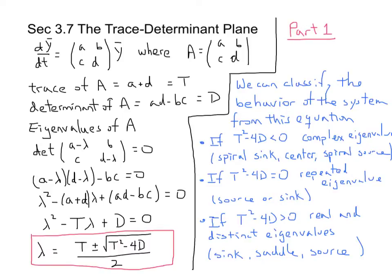The point of the trace determinant plane, and I'll introduce those terms in a minute, is to help us create a picture, a single picture, where we can understand the behavior of our systems and how they change. We've seen basically three types of behaviors: spiral, sinks, sources, and circles.